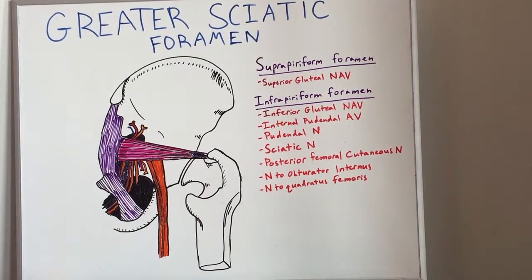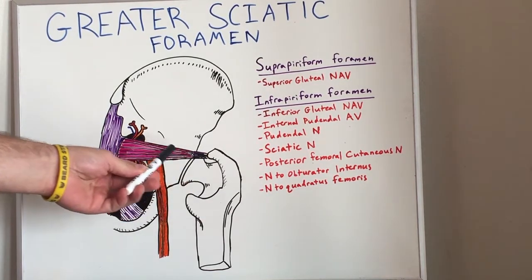The importance of the greater sciatic foramen is that it is a potential space, and the foramen is created by the ligaments which surround it. An extension of these foramen is created by this muscle here, the piriformis,